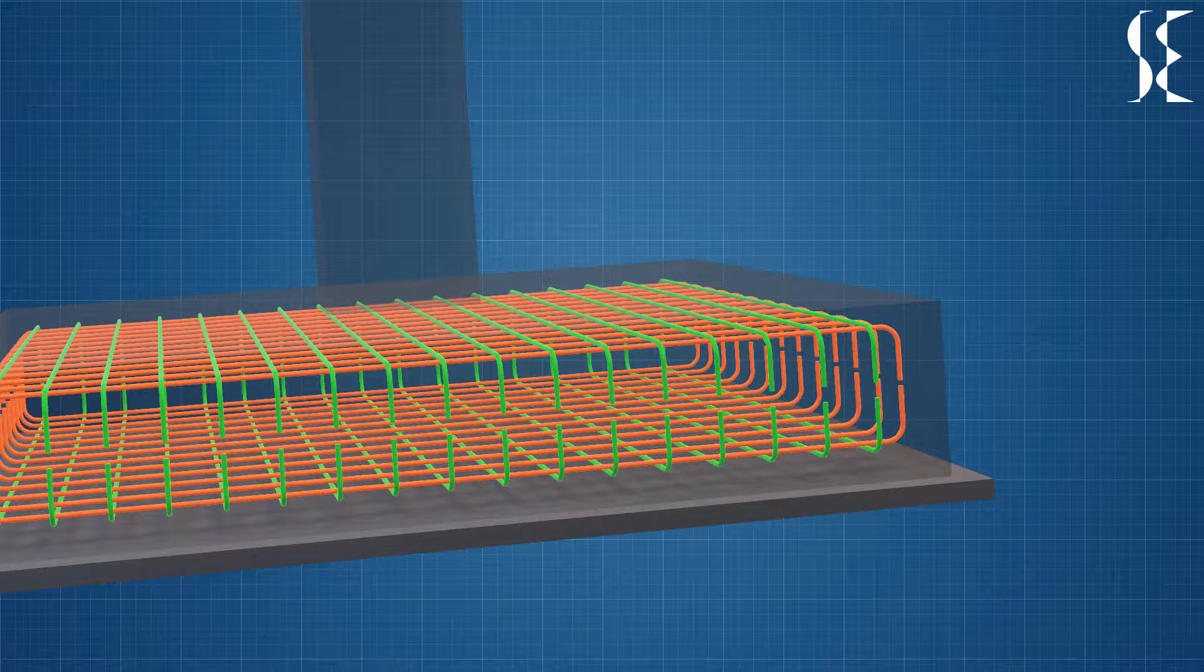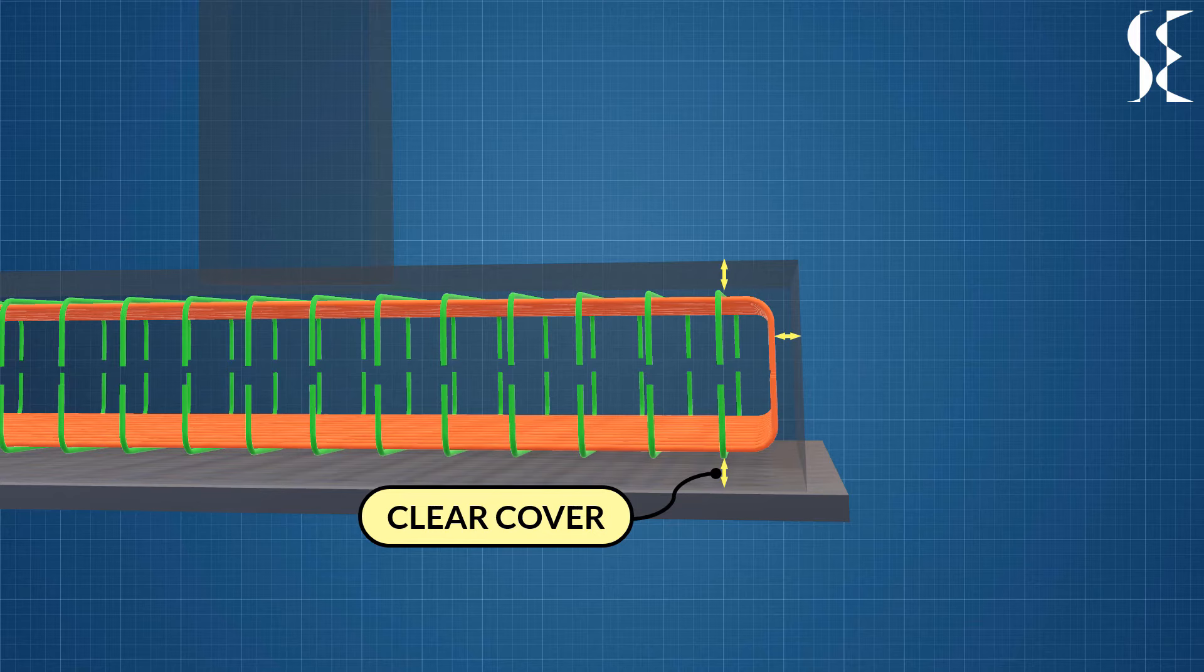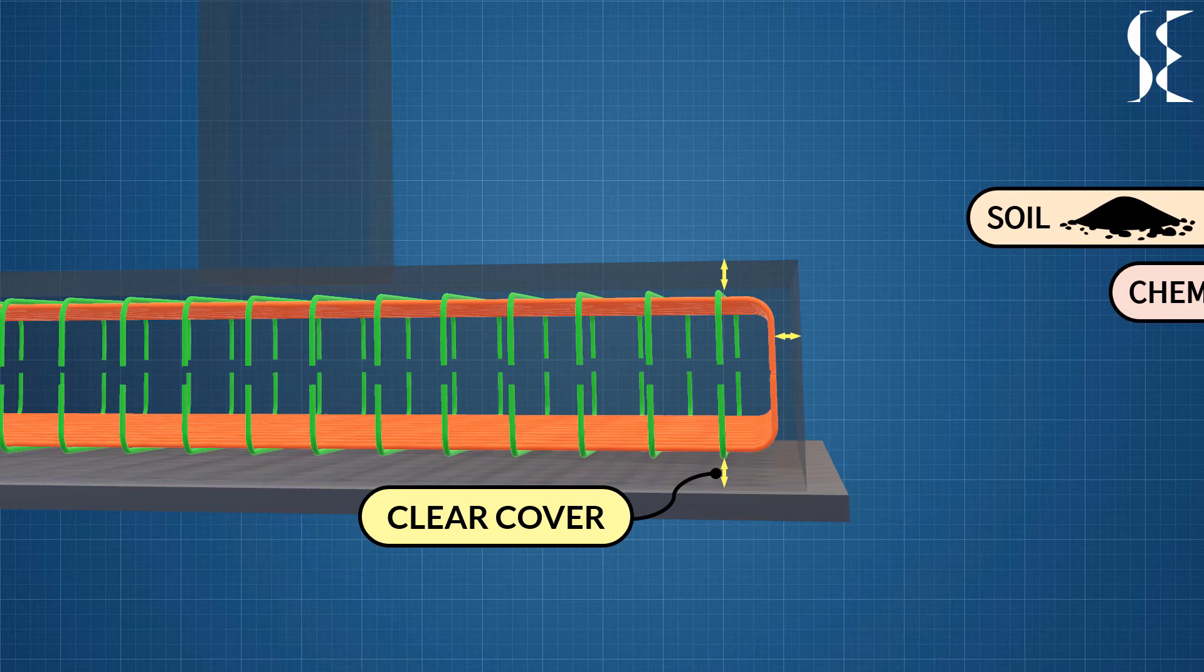A clear cover has to be left from top, bottom and sides for the rebars. The value of cover is governed by site conditions. Typically, the minimum clear cover for footings is 50 mm but may increase from code to code and site conditions. Cover on the footings is on a higher side than other members of the structure as the footings are exposed to soil, chemical and water throughout their lifetime.